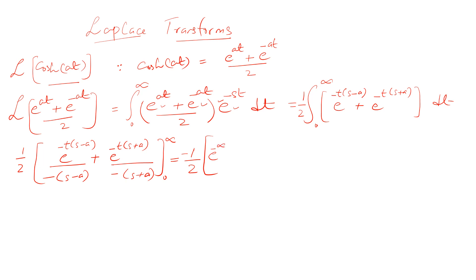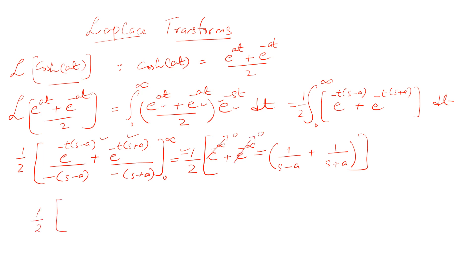The upper limit makes both functions zero. We take the minus signs common outside. e^(-∞) is zero, and e^(-∞) is zero again for the upper limit. For the lower limit, e^0 is 1 over (s-a) plus e^0 is 1 over (s+a). The minus signs become positive, leaving us to take the LCM: (s+a) + (s-a) over (s-a)(s+a).